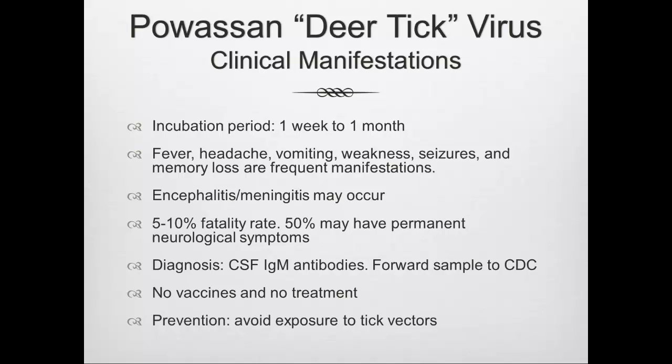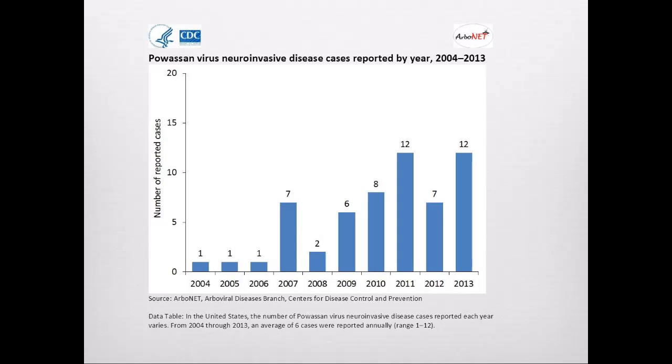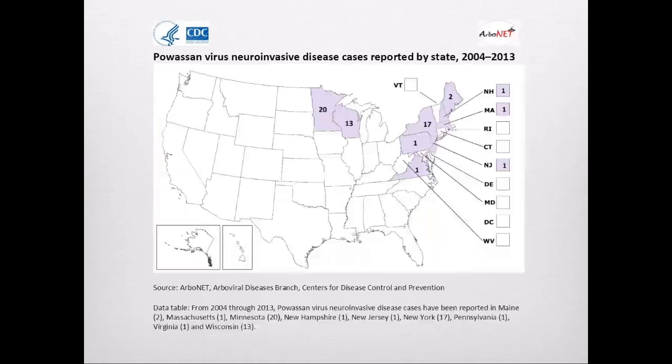In summary: Powassan is an encephalitis occurring in the Northeast and Midwest with the same distribution as Lyme disease due to its association with Ixodes ticks. No vaccines, no treatment, 5 to 10% fatality. The approximately 60 cases since 2004 are distributed across several states, with 17 cases in New York and a surprisingly large number in Minnesota.